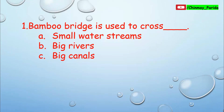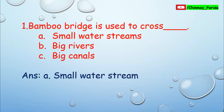Question number 1. Bamboo bridges are used to cross — option A: small water streams, option B: weak rivers, option C: weak canals. It's not possible to cross big rivers and big canals with the help of bamboo bridges. Bamboo bridges are used only to cross small water streams. So the correct answer is option A, small water streams, and it is widely used in the rainy areas of Assam state of India. Children used to use these bamboo bridges to reach their school in rainy season.